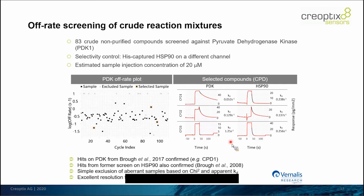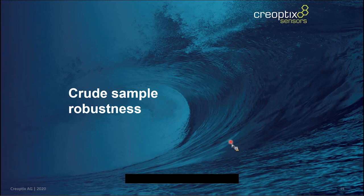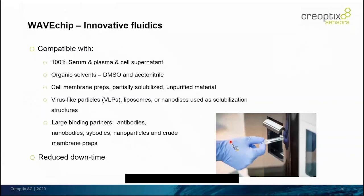Thirdly, I want to introduce some features related to the robustness of the system. Having a very robust system with microfluidics integrated into the disposable chip enables you to confront the system with very crude solutions — for example, serum, plasma, cell supernatant without any dilution. The system also handles organic solvents, cell membrane preps, partially solubilized and unpurified material. You can inject and capture particles such as virus-like particles, liposomes, and nanodiscs. Of course, you can also work with large binding partners — antibodies, nanobodies, sybodies — you name it.